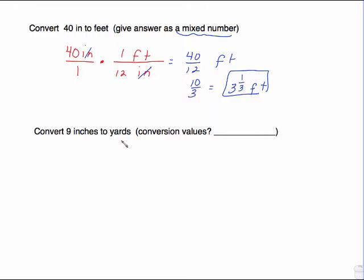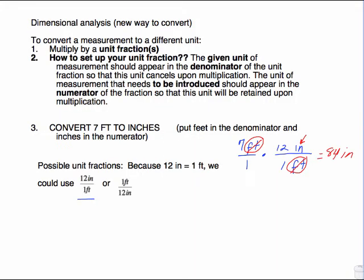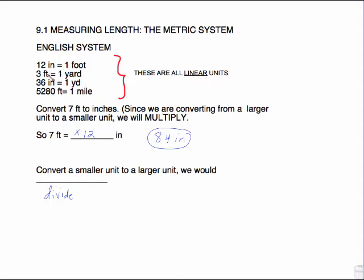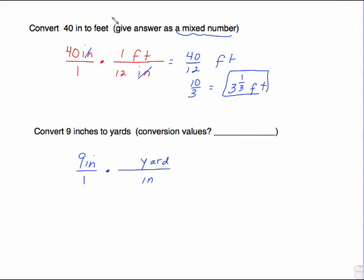Convert 9 inches to yards. So 9 inches over 1. I want to get rid of the word inch, and I want to end up with the word yard. Do you know how many inches are in a yard? Look back at the chart. There are 36 inches in 1 yard. So it's 1 yard is 36 inches. Be careful that you put the numbers where they go. It is 36 inches in 1 yard. That's why the 36 is with the inches. When you multiply, cancel that inch, and we have 9 over 36.